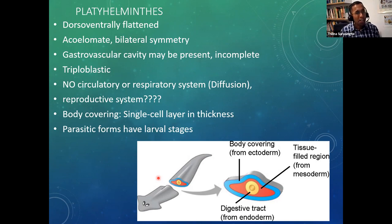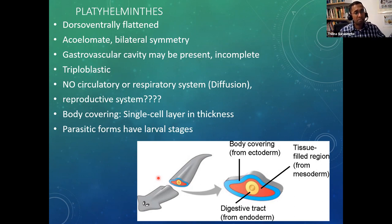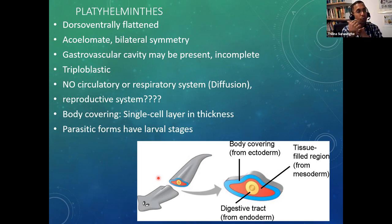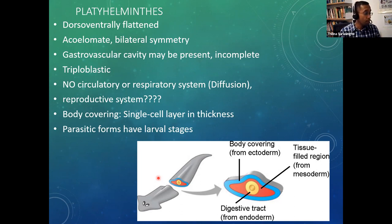Some may have a gastrovascular system, but they don't show a circulatory system — they are simple, flat bodies. They don't require a system to circulate gases either. They do have a very elaborate, well-developed reproductive system. Their body covering is a single cell layer in thickness, possibly with an extra cuticle on top. The parasitic forms have larval stages; the free-living forms do not.